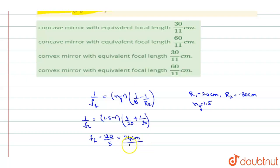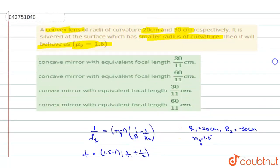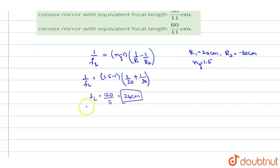So the focal length of the lens comes out to be 24 cm. Now if it is silvered. Now see, it is silvered at the surface which has a smaller radius of curvature, so this first surface will be silvered. So it acts like a mirror. When it acts like a mirror, you have to find the focal length of the mirror for that.